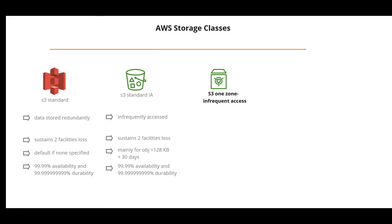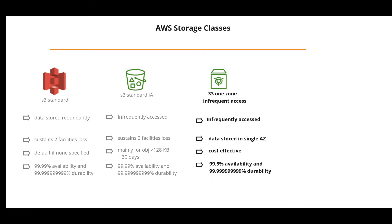S3 One Zone-Infrequent Access is used when data is accessed less frequently, but it stores data in a single availability zone, unlike the other two classes which store data in a minimum of three availability zones. Because of this, its cost is 20% less than Standard-IA. However, data can be lost if that availability zone is destroyed. It is an optimal choice for less frequently accessed data that doesn't require high availability, and is good for storing backup data.